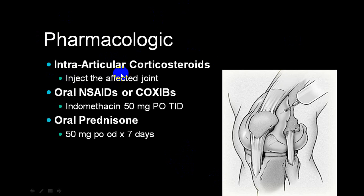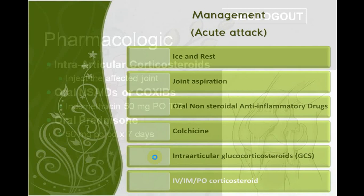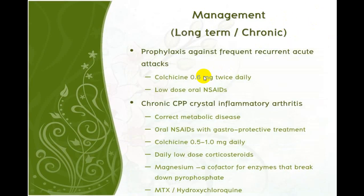Treatment of pseudogout: joint aspiration, local intra-articular steroids (after excluding infection), NSAIDs or COX-2 inhibitors, and short-term oral prednisolone to relieve acute inflammation. For long-term management, colchicine and low-dose NSAIDs are used. Some clinicians use magnesium supplements, hydroxychloroquine, or methotrexate — though not 100% effective. Correction of underlying metabolic disease when possible is advised.